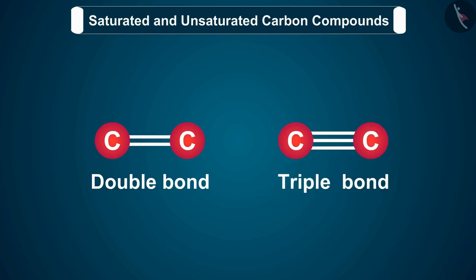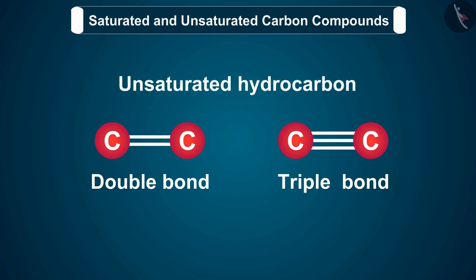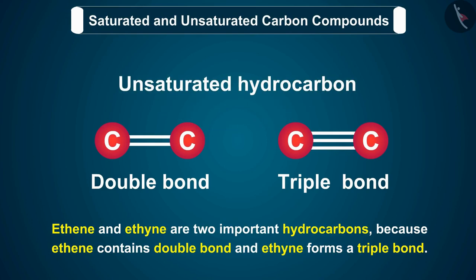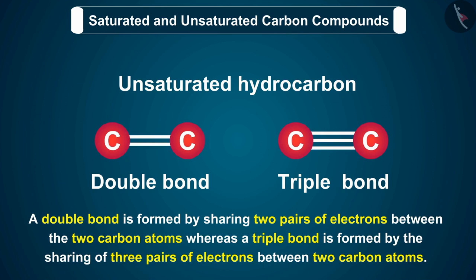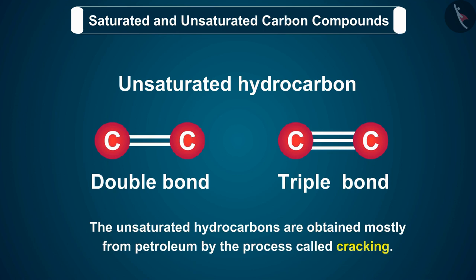A hydrocarbon in which two carbon atoms are connected by a double bond or a triple bond is called an unsaturated hydrocarbon. Ethene and ethyne are two important hydrocarbons because ethene contains a double bond and ethyne forms a triple bond. A double bond is formed by sharing two pairs of electrons between two carbon atoms, whereas a triple bond is formed by the sharing of three pairs of electrons between two carbon atoms.